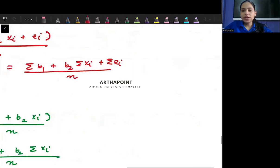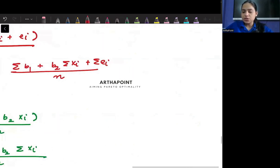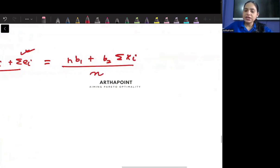Now clearly we know that the sum of the error terms is 0. So this becomes 0 and this gives me b1 is getting added up n times. So nb1 plus b2 summation xi by n.